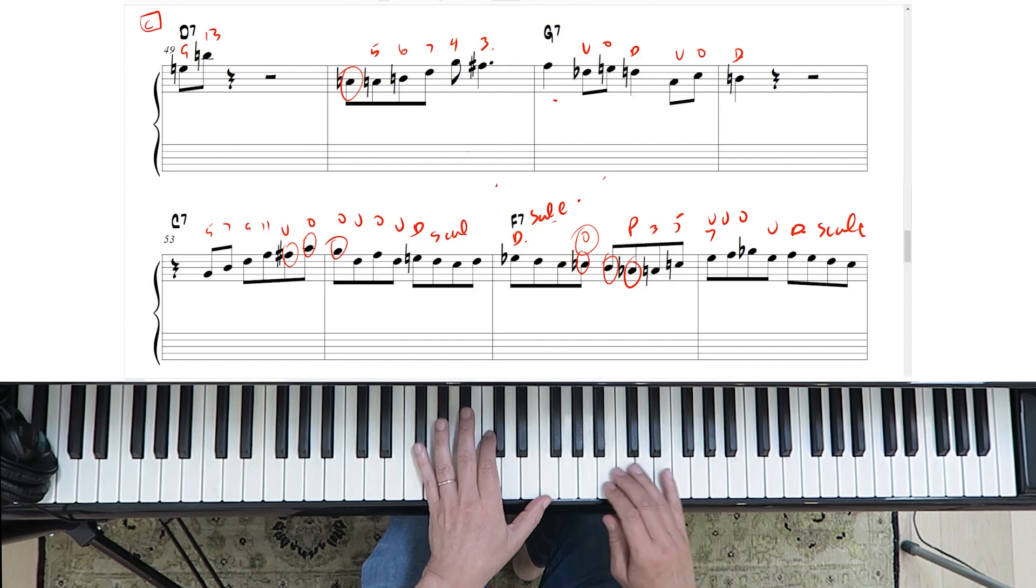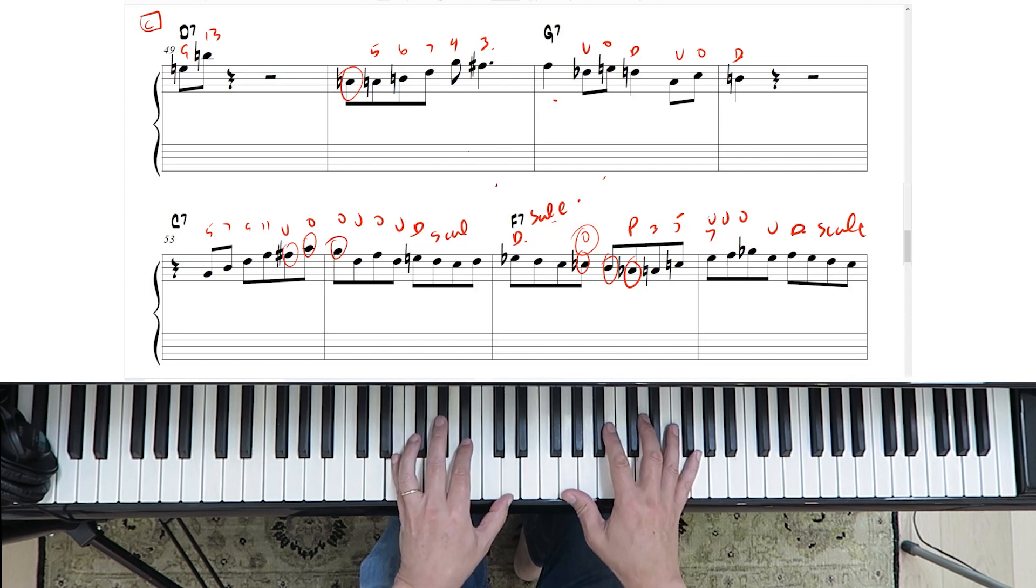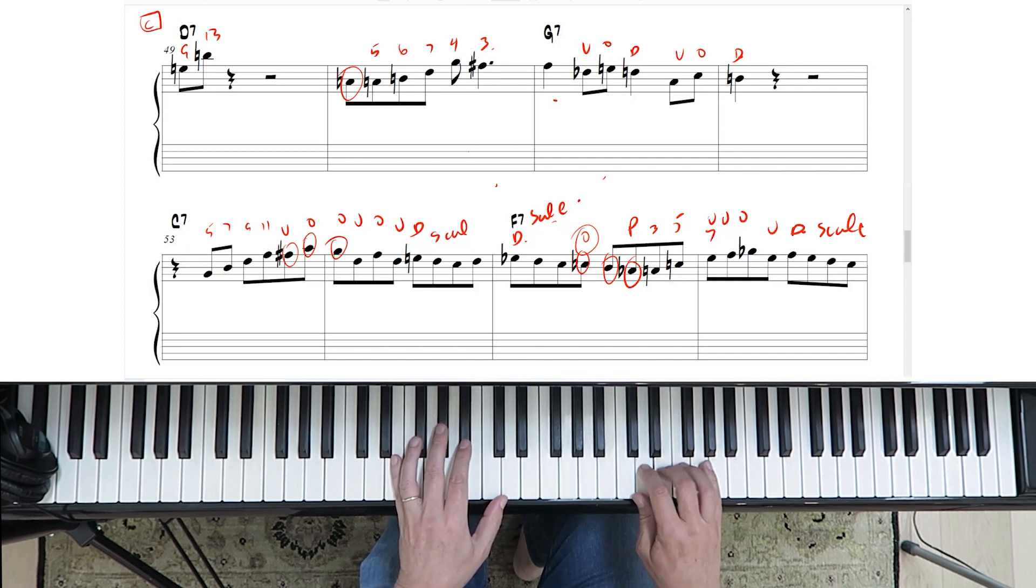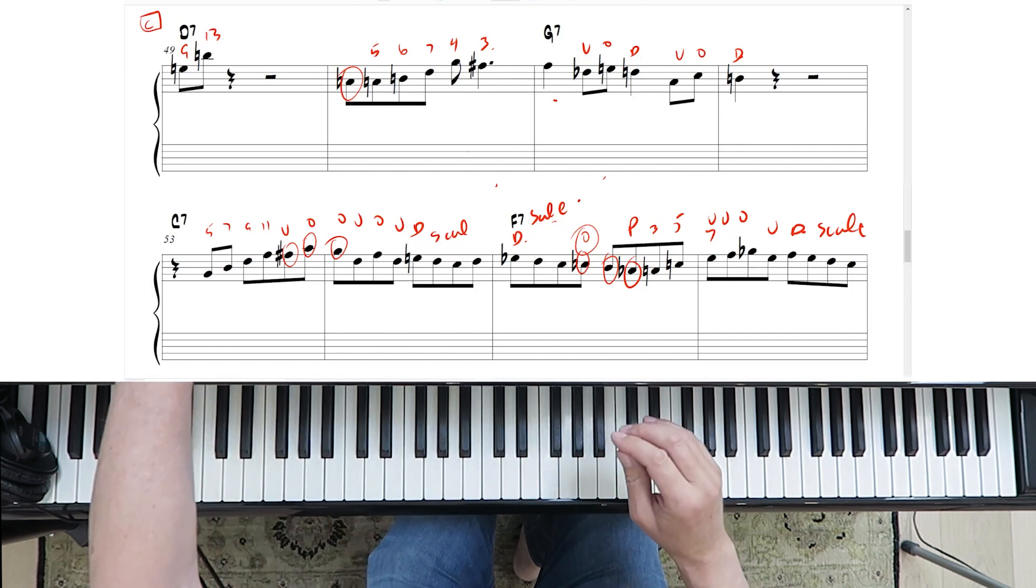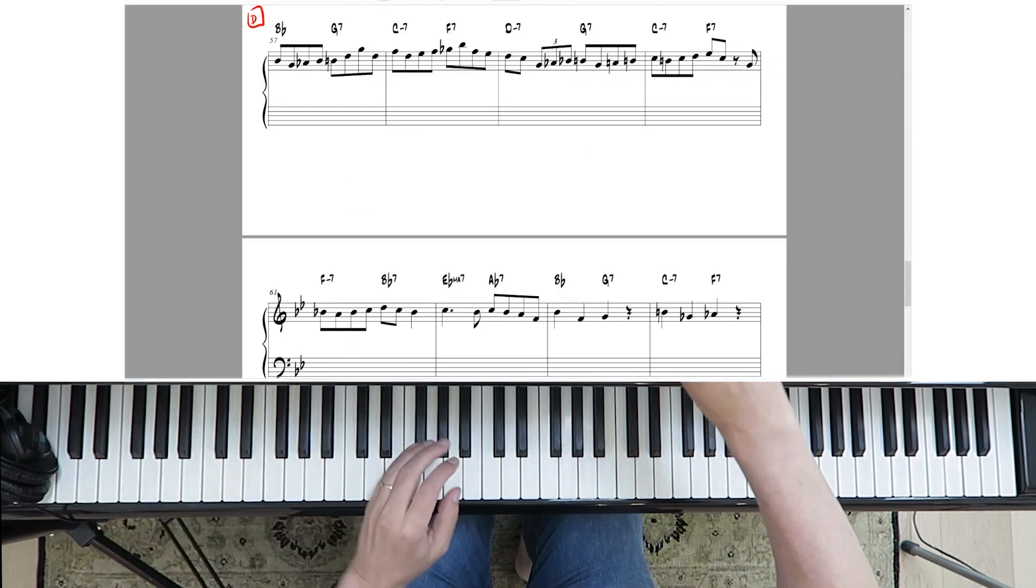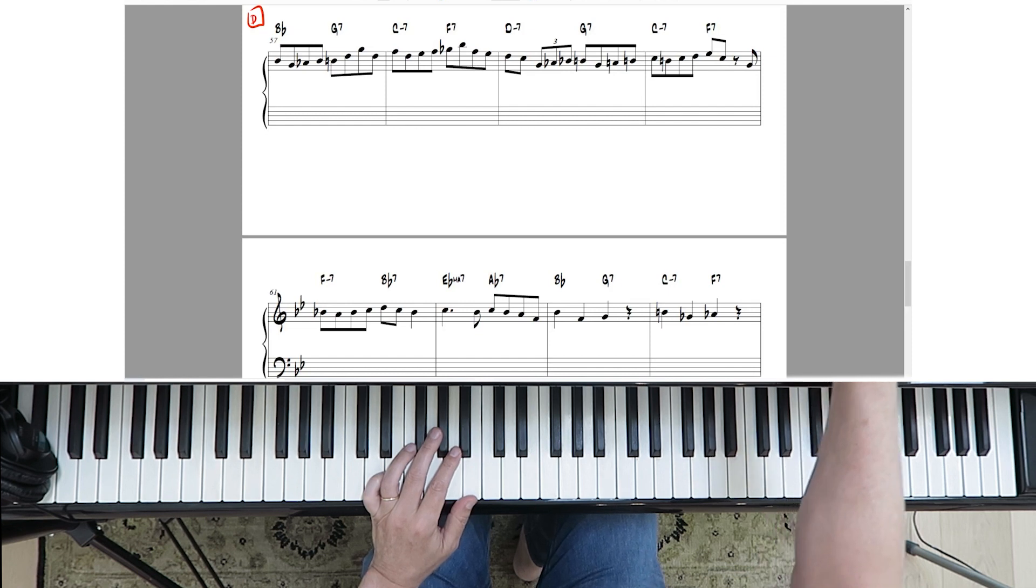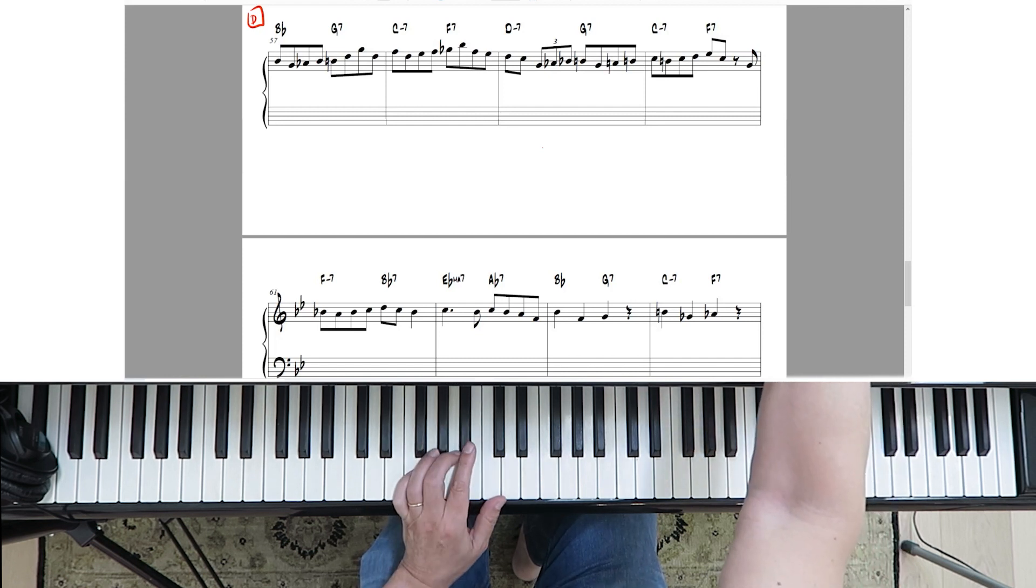So yeah, from the beginning of the bridge. Okay, close enough for jazz. Let's move on to the final section, which is the last A. And he's continuing that bebop line all the way through the next three bars. So that's quite a long line where you've got an entire eight bars of bebop lines.